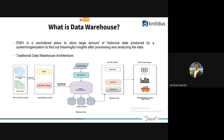A data warehouse is a centralized place to store large amounts of historical data produced by a system or organization, to find meaningful insights after processing and analyzing the data. The main motive is to dump your data at one location so you can gain meaningful insights — for example, finding the most-selling or least-selling products.